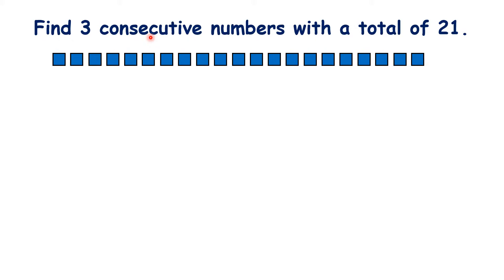Or with 350, 351 and 352. So here we need to write three consecutive numbers with a total of 21. Our numbers can't be 2, 3 and 4 because 2 plus 3 plus 4 is 9, not 21.